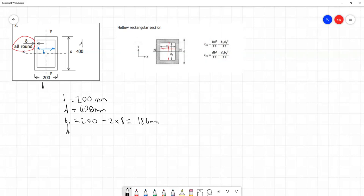Similarly for d1, this is going to be equal to 400, and again minus two times 8 for those top and bottom sections. 400 minus two times 8 gives us 384 millimeters.